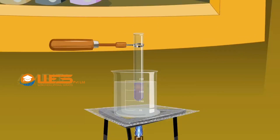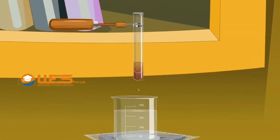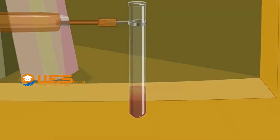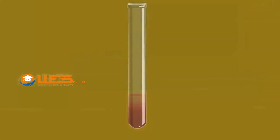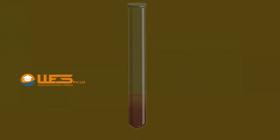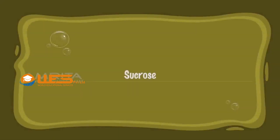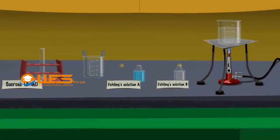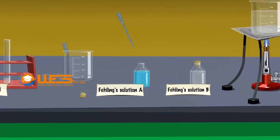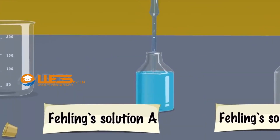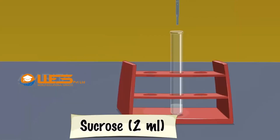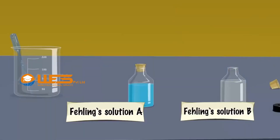Glucose is a reducing sugar that reduces the Cu²⁺ ions in the test reagent to a red precipitate of copper oxide. Sucrose. Take 2 ml of Fehling's solution A using a dropper. Add it to 2 ml aqueous solution of sucrose taken in a test tube. Then add 2 ml of Fehling's solution B into the test tube.